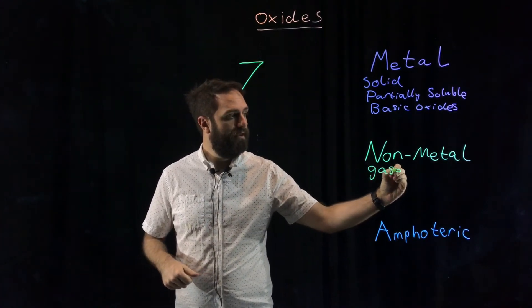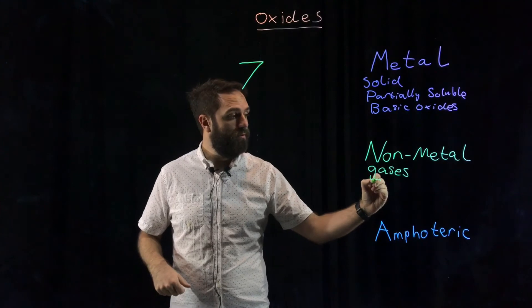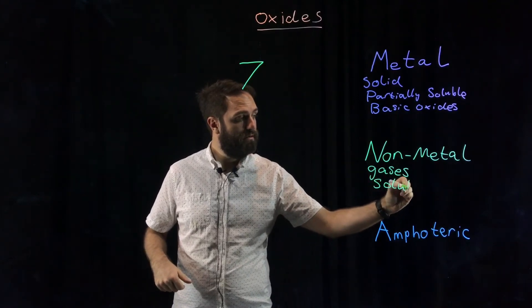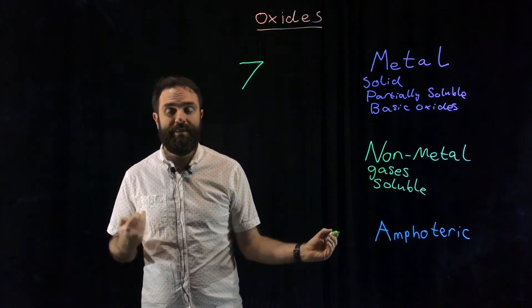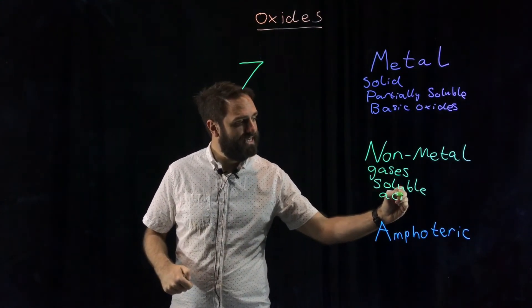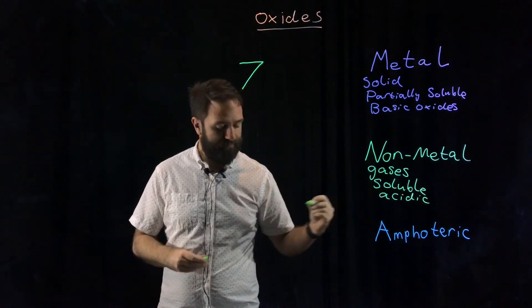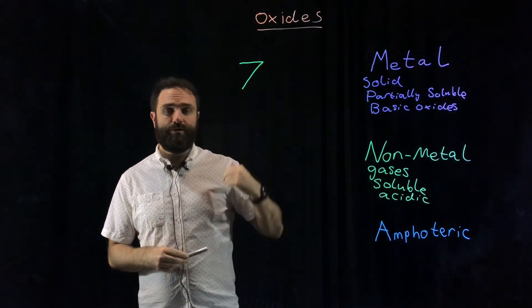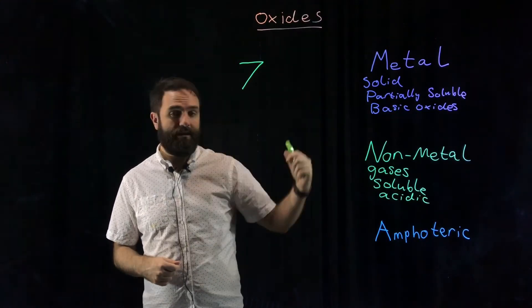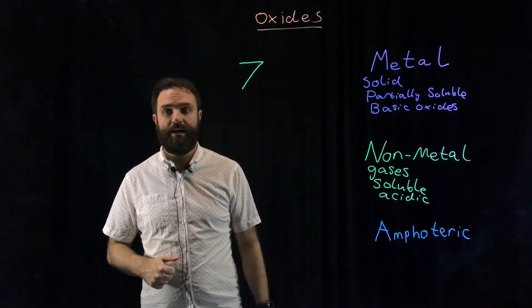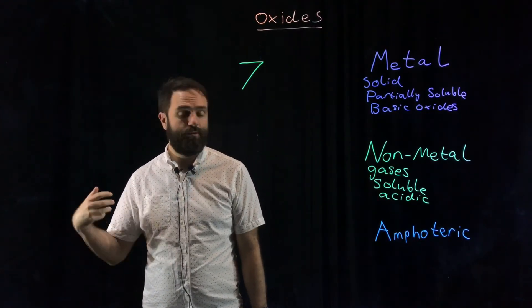Nonmetal oxides are gases at room temperature. They're also very soluble in water, and when you dissolve them in water they lower the pH. They create an acidic oxide. Neutral substances: no reaction with acids or with bases. Metals create basic oxides. Basic substances will react with acids.